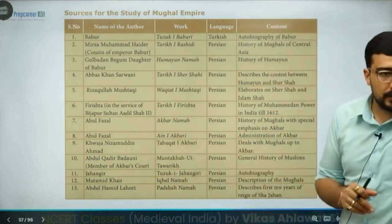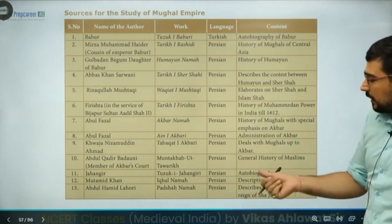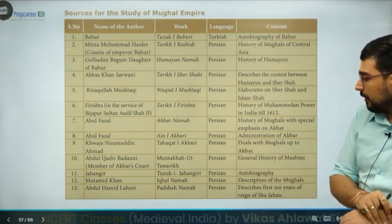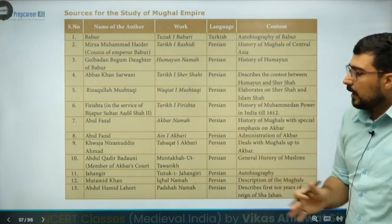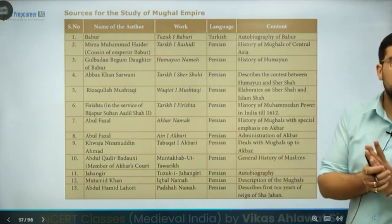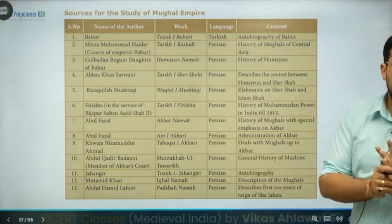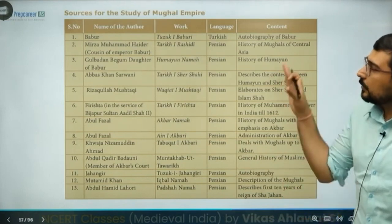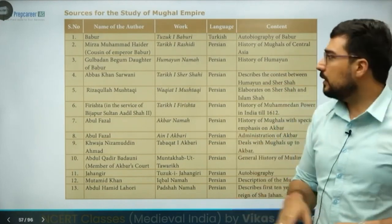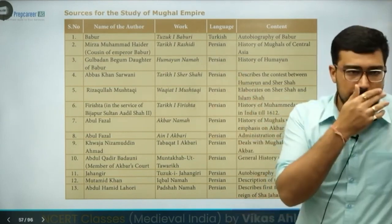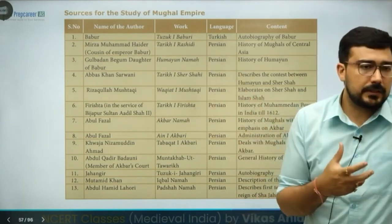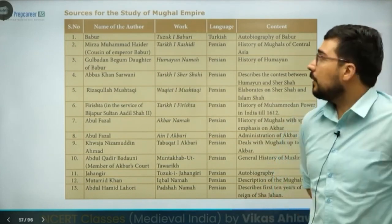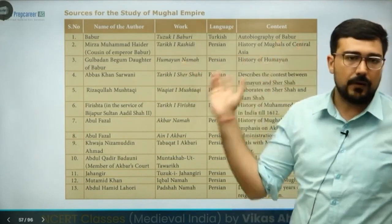Jahangir wrote his own autobiography Tuzuk-i-Jahangiri. Mutamid Khan wrote Iqbalnama describing the Mughals. Abdul Hamid Lahori wrote Padshahnama during Shah Jahan's reign. These are the various historical sources we have from the Mughal period.